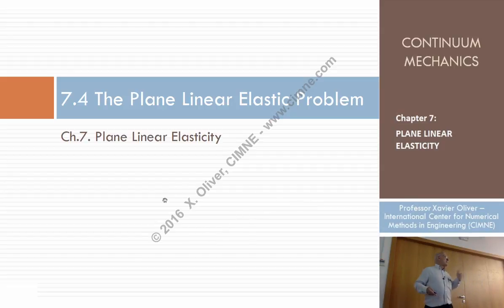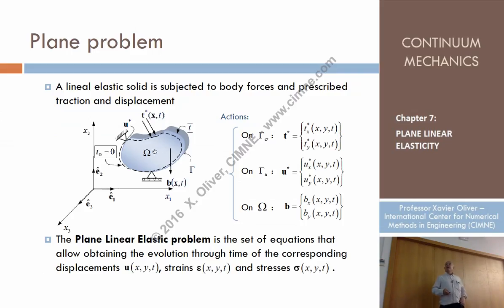So finally, we have a simplified problem in which we just have to study the geometry of the cross-section in X and Y, in X1, X2, and X3 we forget. The actions are always contained in the plane of analysis, both the tractions, the body forces, and the prescriptions in terms of gamma U are also prescriptions on Ux and Uy, and that is the situation.